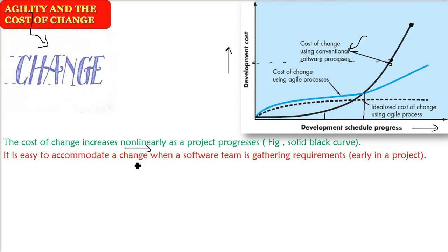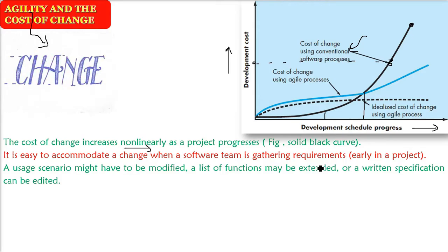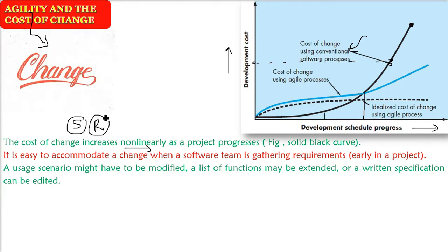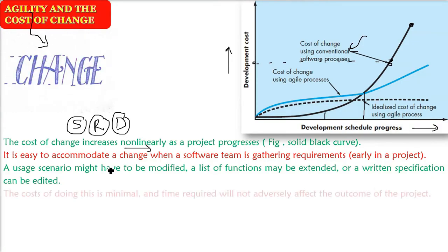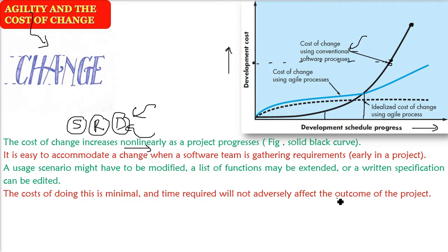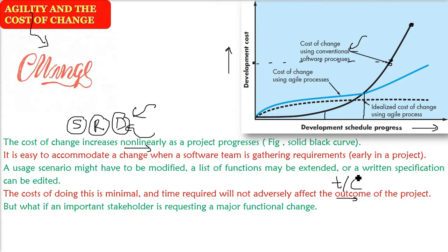It is easy to accommodate changes when you are in the requirement phase, early in the stages of the project. When the user comes early, you can change the requirements because the design has not been made, the modeling has not been done, the coding has not been done. But if the change is requested at a later stage, it is very difficult to cut the cost and keep the schedule, because it will adversely affect both.